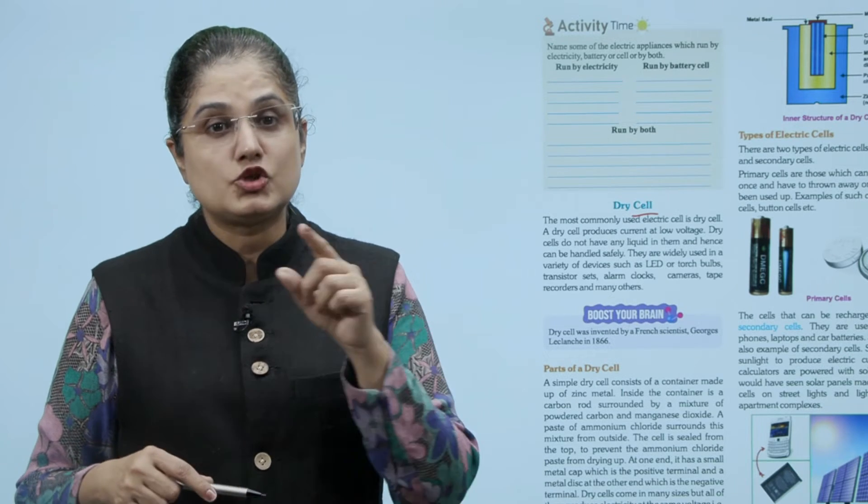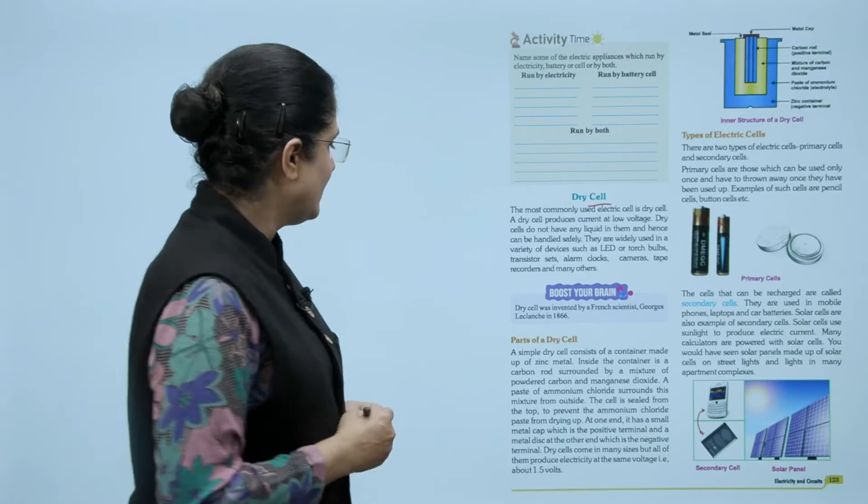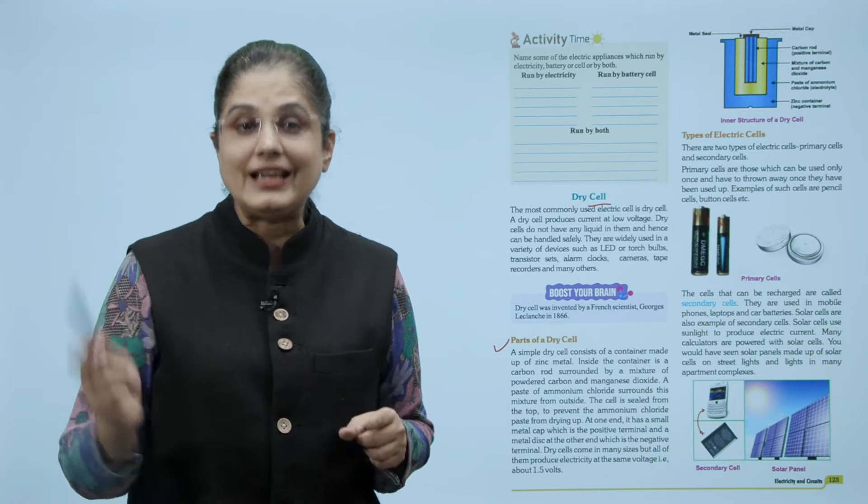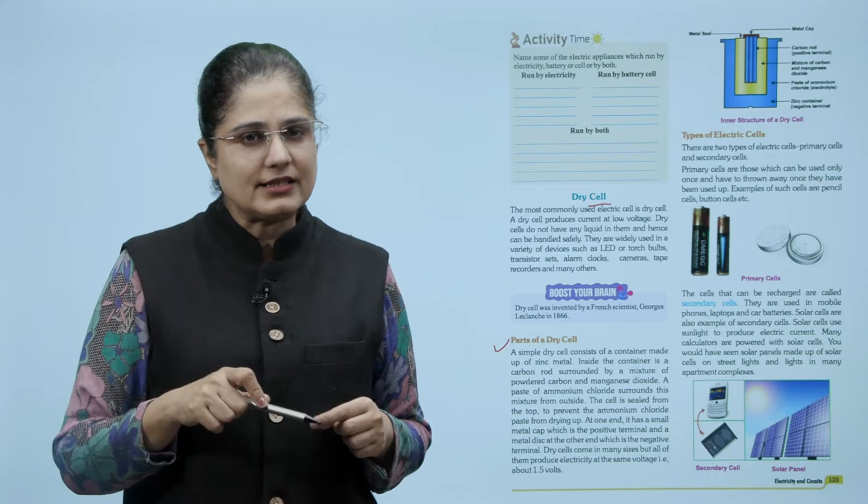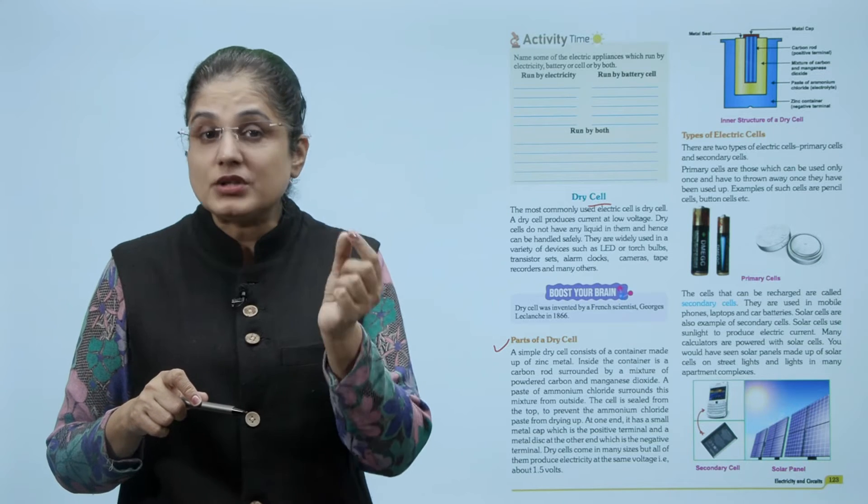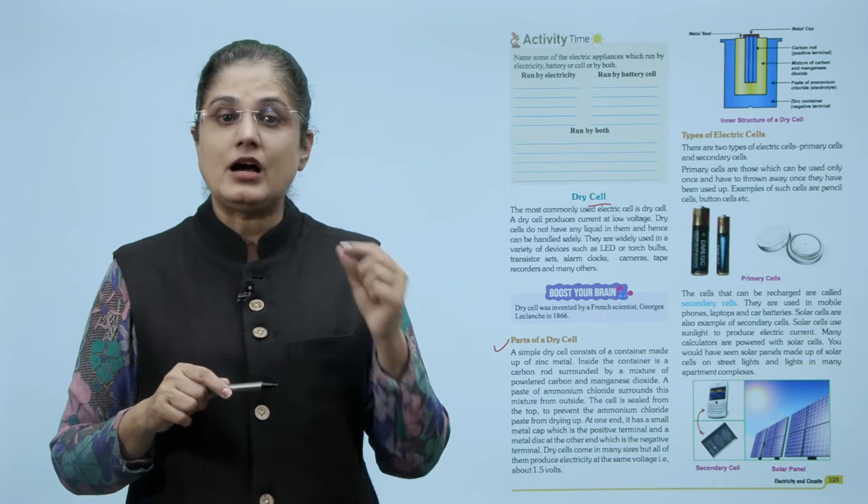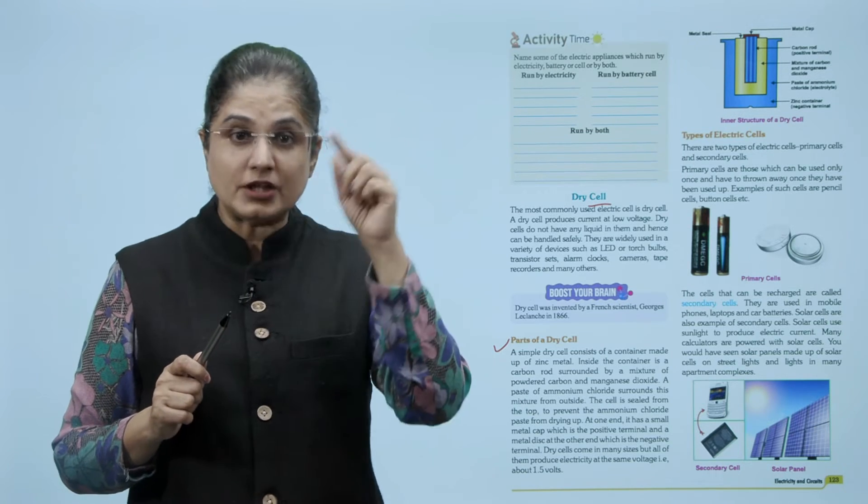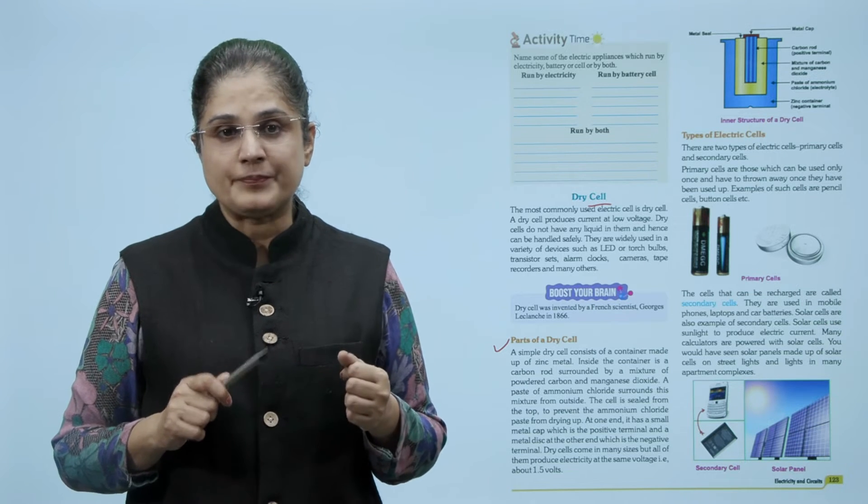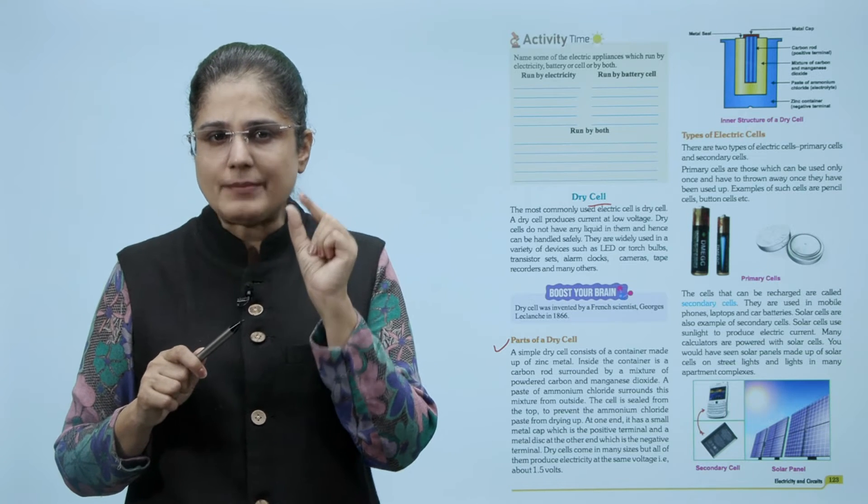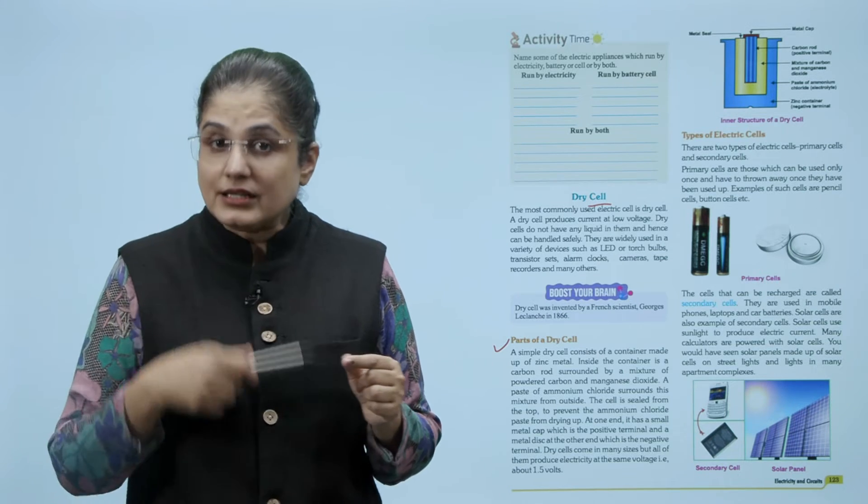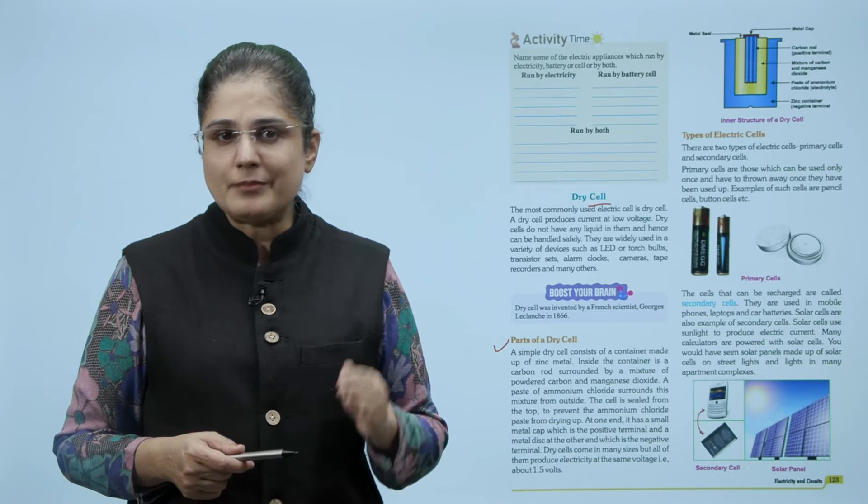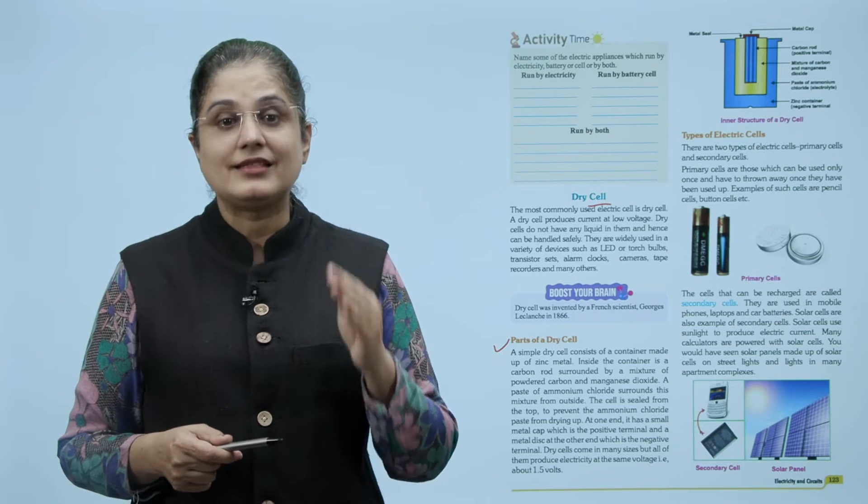Now dry cell was invented by a French scientist George Leclanche in 1866. We will now look at the parts of a dry cell. A simple dry cell consists of a container made of zinc metal. Inside the container is a carbon rod surrounded by a mixture of powdered carbon and manganese dioxide. A paste of ammonium chloride surrounds this mixture from outside. The cell is sealed from the top to prevent the ammonium chloride paste from drying up. At one end it has a small metal cap which is the positive terminal and a metal disc at the other end which is the negative terminal. Dry cells come in many sizes but all of them produce electricity at the same voltage, that is about one point five volts.